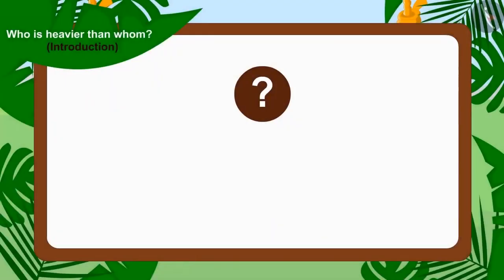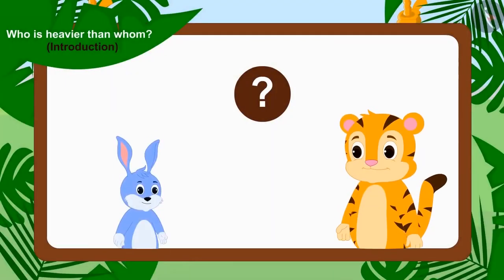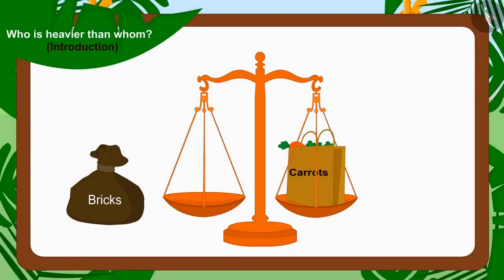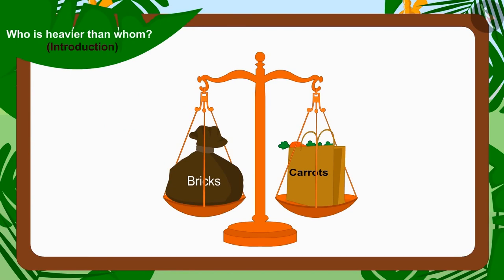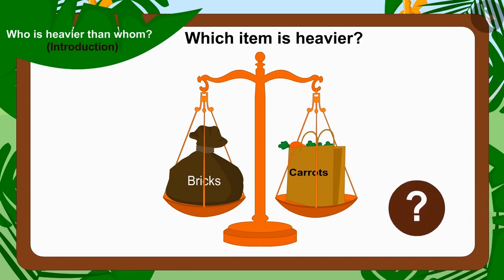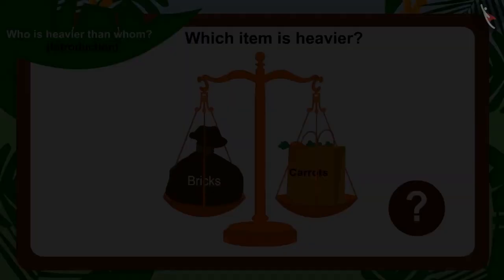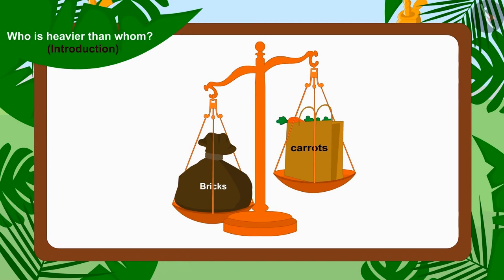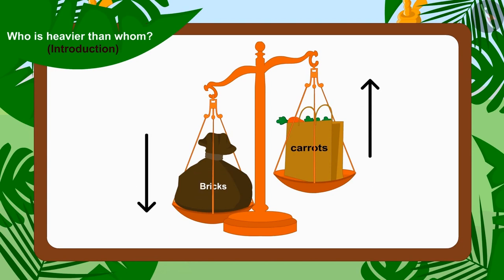Now the competition will be between Sher Khan and Bunny. Uncle replaced Bhola's sack with the sack filled with Sher Khan's bricks. This time the scale tipped towards the sack filled with Sher Khan's bricks. So the sack with Sher Khan's bricks is a lot heavier than Bunny's bag filled with carrots.